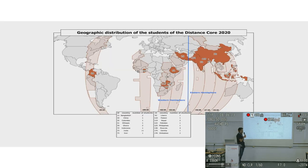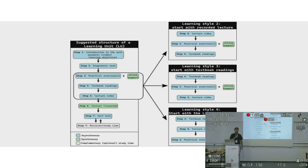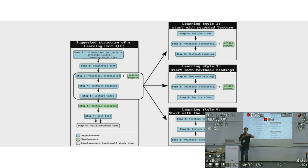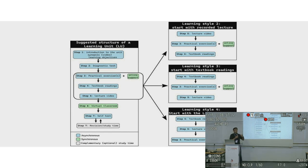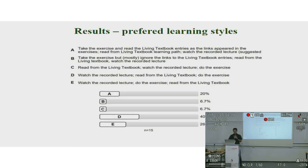We had 32 students who could not travel and were scattered among eight time zones, so we wanted to design a course that would be flexible enough. The idea was that a student could start in a classical setting — there is a lecture, then exercises, then some reading — or maybe the student prefers to read first, or to start with the exercise. Students were allowed to take their learning in any order they want, to provide that flexibility.